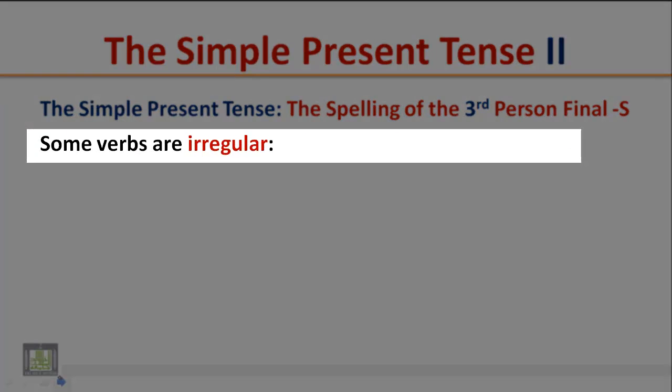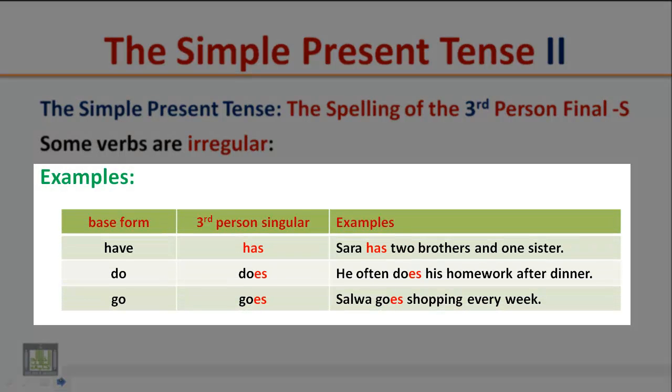Some verbs are irregular. Examples: Have becomes has. Sarah has two brothers and one sister. Do becomes does. He often does his homework after dinner. Go becomes goes. Salwa goes shopping every week.